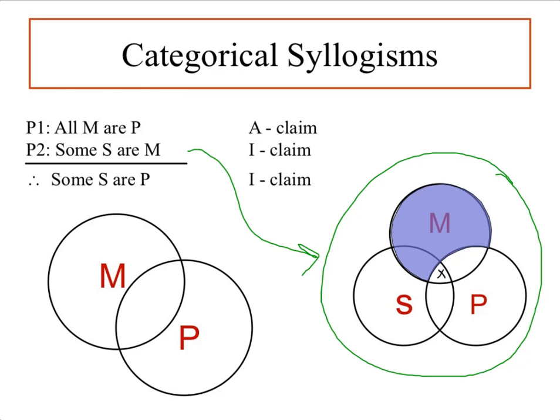In the last video on Categorical Syllogisms, 'Where to Put the X, Part 1,' we determined that the shading of premise 1, 'all M or P,' forced us in premise 2 of where to put that X. We really didn't have a choice of where to put it with respect to that M category that's shaded, because the shaded region doesn't exist. So it wouldn't make sense to put the X in an area that doesn't exist with reference to the argument.